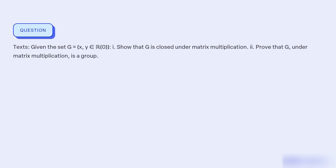What is the objective of showing that the set G, consisting of X and Y in the range of zero, is closed under matrix multiplication and proving that G, under matrix multiplication, forms a group?